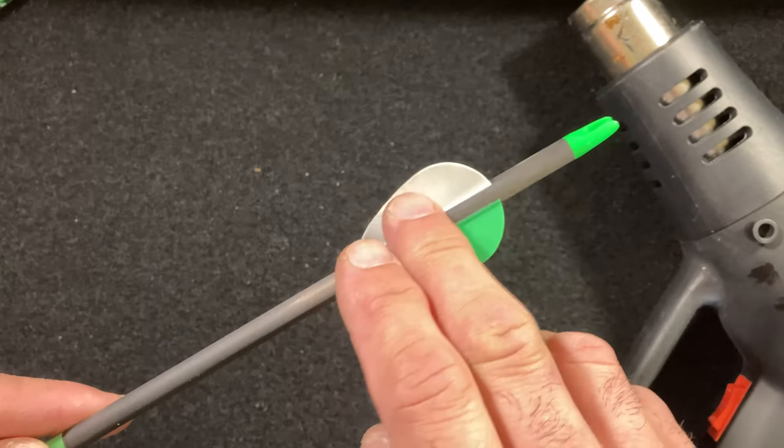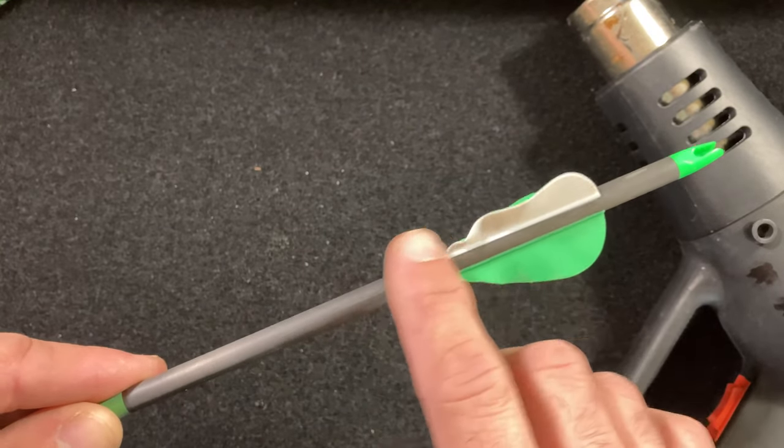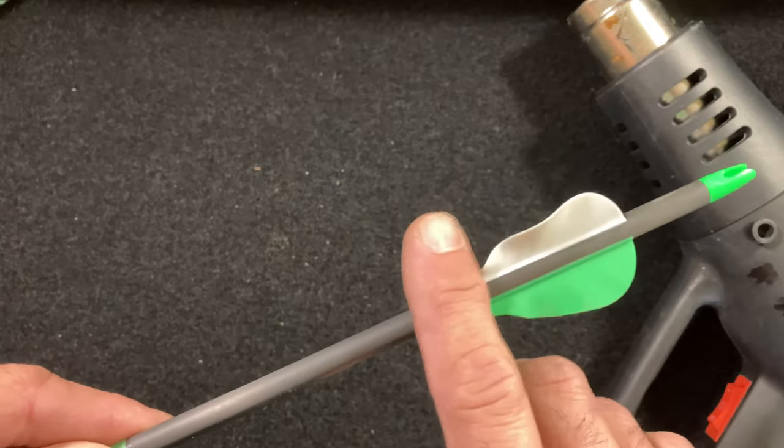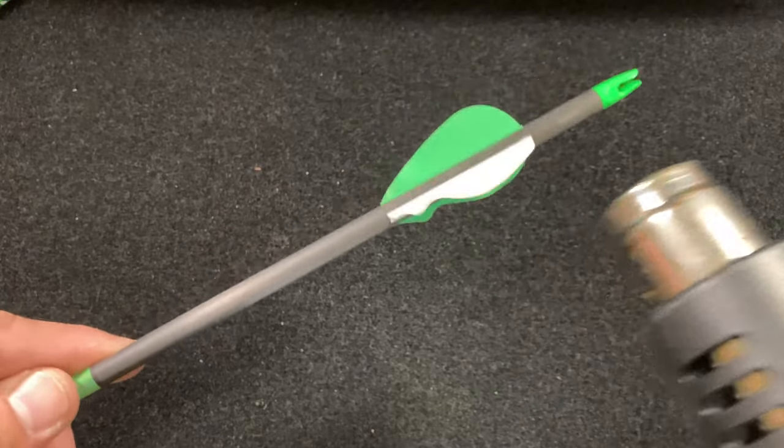Over time, going through crappy arrow rests and targets that allow pass-through, you'll notice your veins start to dwindle. If they haven't come off, they start to crinkle. By applying heat, you'll notice how they straighten out by themselves. You don't want to put too much heat.